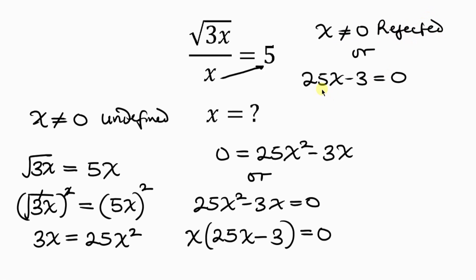Now, to get the value of x from here, we have to move negative 3 to the right, so that we have 25x to be equal to—as negative 3 crosses to the right, it becomes positive 3. To get the value of x, we divide both sides by 25. See that 25 cancels that 25, leaving behind x to be equal to 3 over 25.